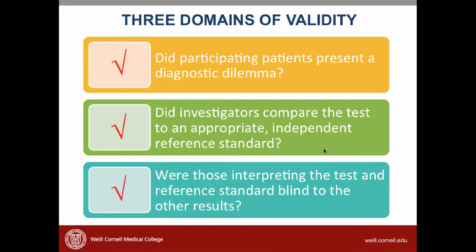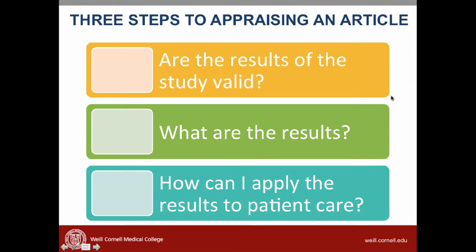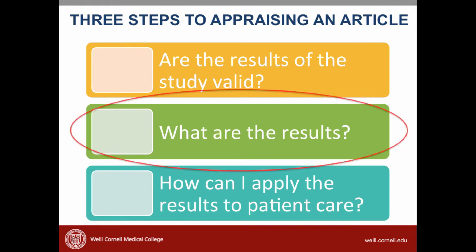So the question is: are the results valid? As we discussed earlier, validity is a spectrum — studies can be weak, strong, or somewhere in between. In the case of this study, all of the validity criteria were met, so I believe it's a strong study. Now that we've decided this is a strong study and we believe the results, it's time to interpret those results. The next video will go over how to interpret the results of this study.